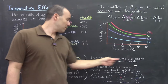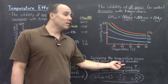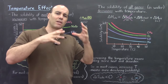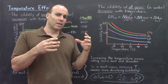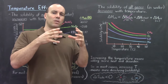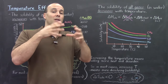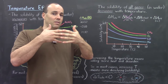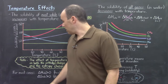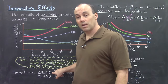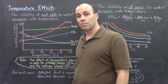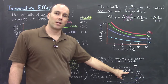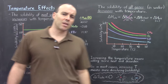Increasing the temperature means, of course, adding more heat, but it also means adding more disorder. That's because temperature is a measure of the amount of thermal motion in the particles — hotter temperatures means the particles are moving and shaking more, so they're more disordered. Increasing the temperature therefore favors heat being required and also favors more disorder in the particles. So in most cases, increasing the temperature means more dissolving, or greater solubility.